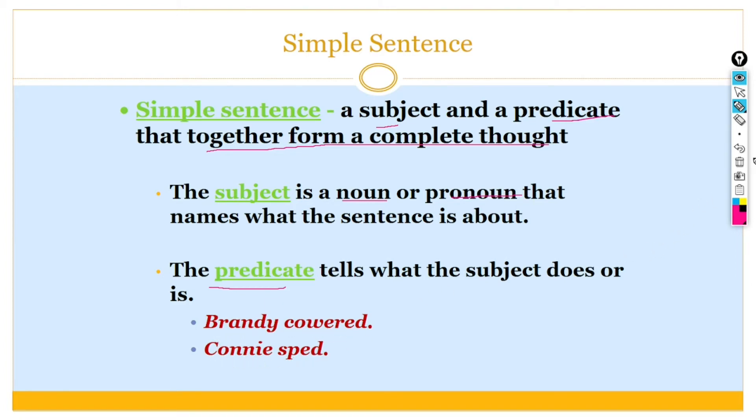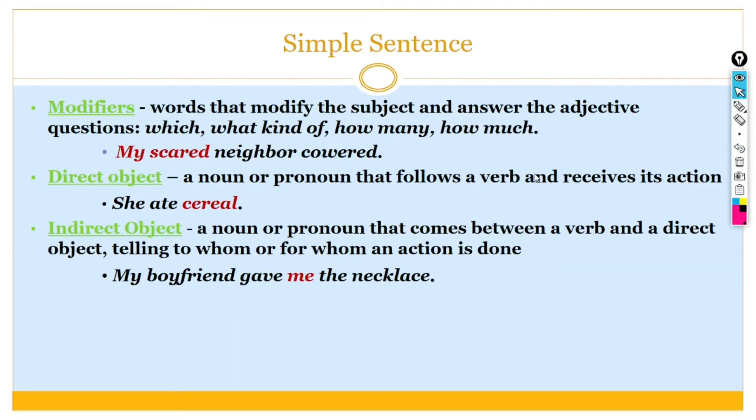So here we have the predicates. Simple sentence have modified words that modify the subject and answer the adjective questions: which, what kind of, how many and how much. And its example is my scared neighbor covered. So if you do not use this word scared, that is the modifier, still our sentence is complete.